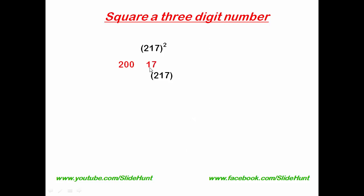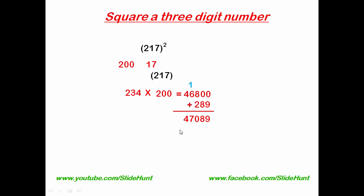The next step is to add 17 with 217, which gives 234. Then subtract 17 from 217, which gives 200. Now multiply these two numbers: first multiply 234 with 2, which is 468, and then add two zeros, giving 46800. Next step is to square 17 and add it to this number. 17 squared is 289.